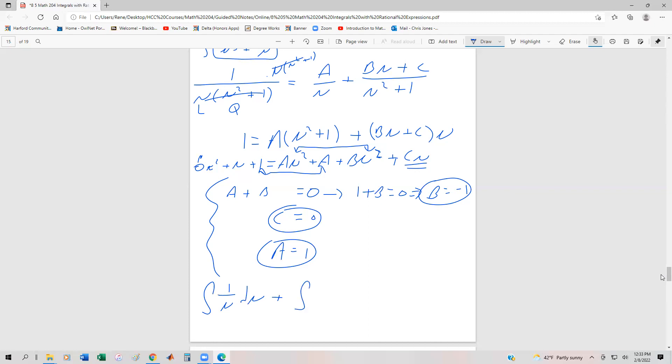And then we have this negative u plus zero because C is zero divided by u squared plus one du. And of course, we're just going to write this as just negative u in the numerator.